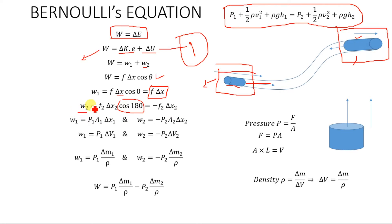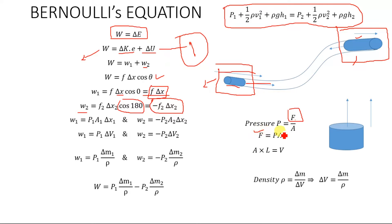We have W1 equals F·Δx and W2 equals minus F2·Δx2, which is negative because the angle is 180 degrees. Now we express these in terms of pressure. Since pressure P equals force per unit area, force equals P times A. Substituting, we get W1 equals P1·A1·Δx1 and W2 equals minus P2·A2·Δx2.